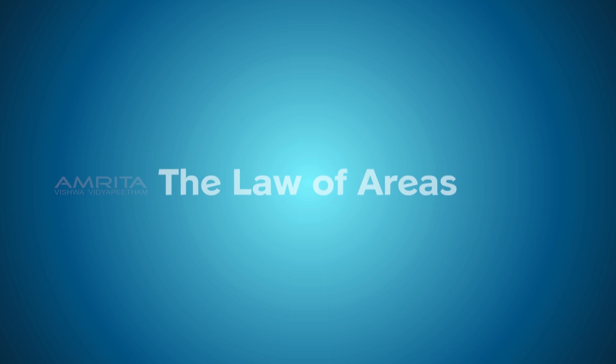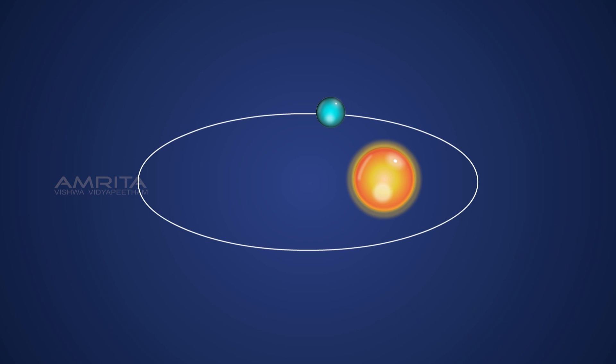The second is the law of areas. A line joining any planet to the sun sweeps out equal areas in equal times. To explain that, consider two points A and B on the planet's orbit. As the planet moves from point A to point B, the area covered is in t seconds.